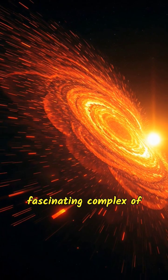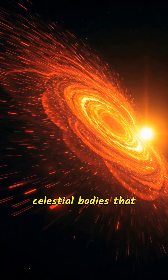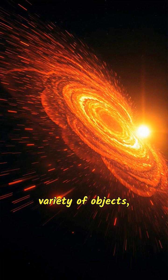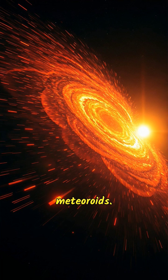Our solar system is a fascinating complex of celestial bodies that revolve around a star known as the Sun. It is located in the Milky Way galaxy and consists of a variety of objects, including planets, moons, asteroids, comets and meteoroids.